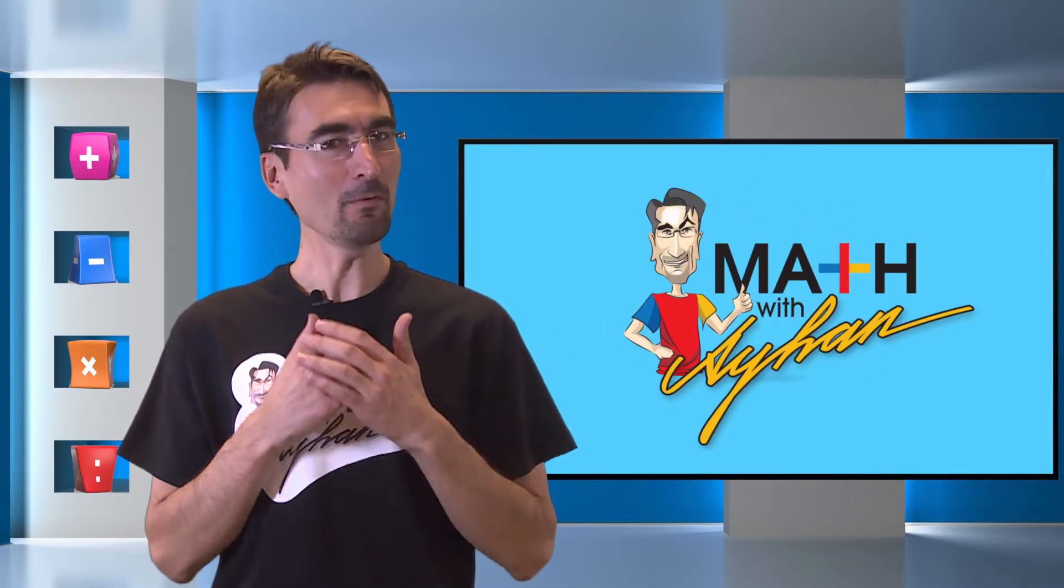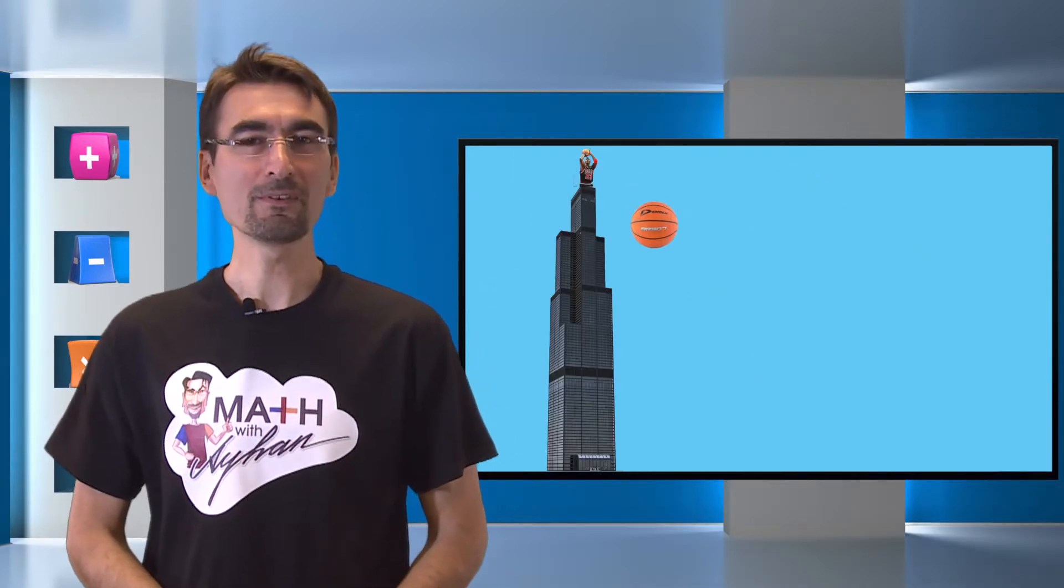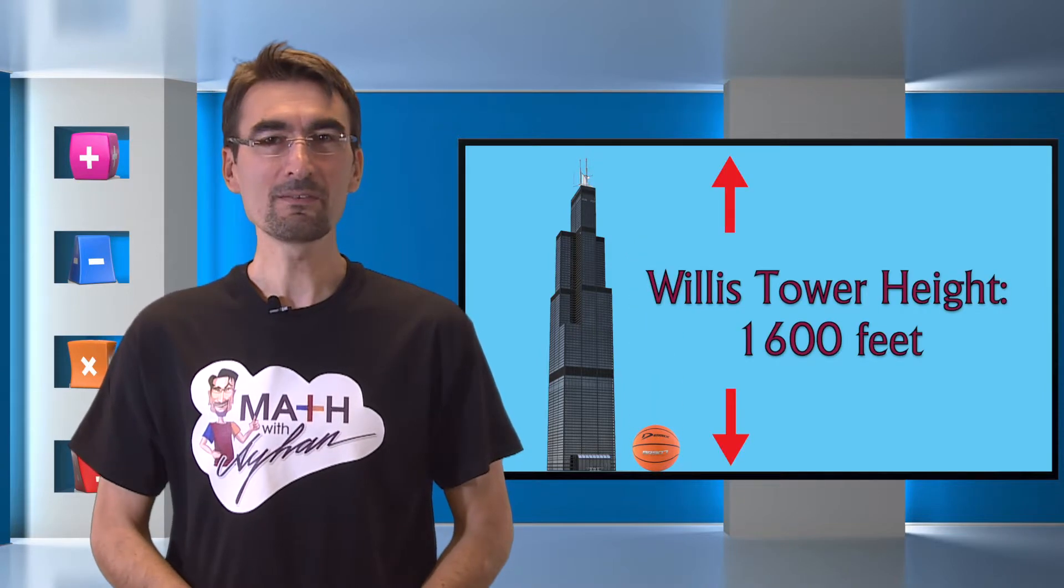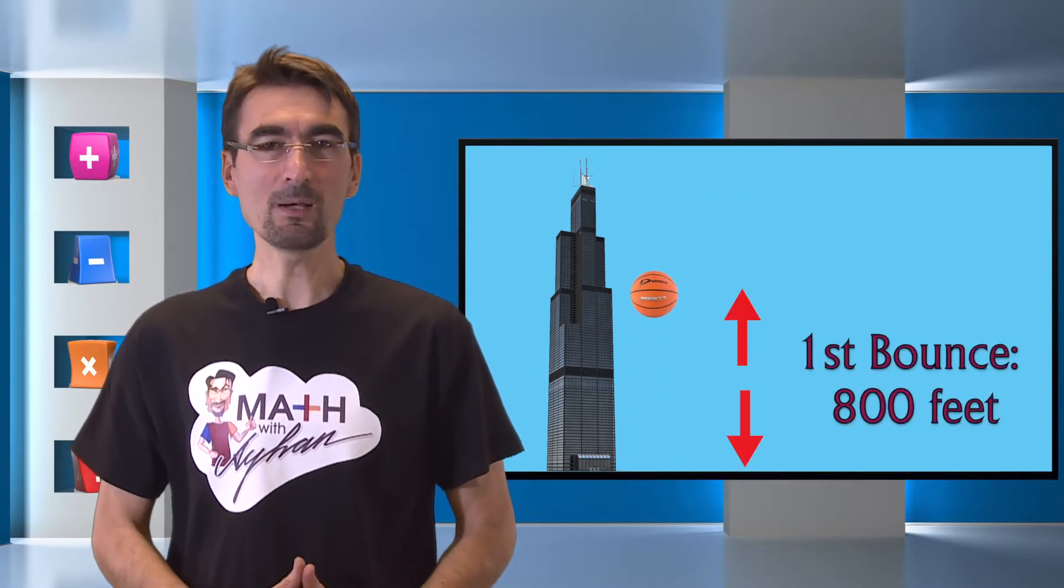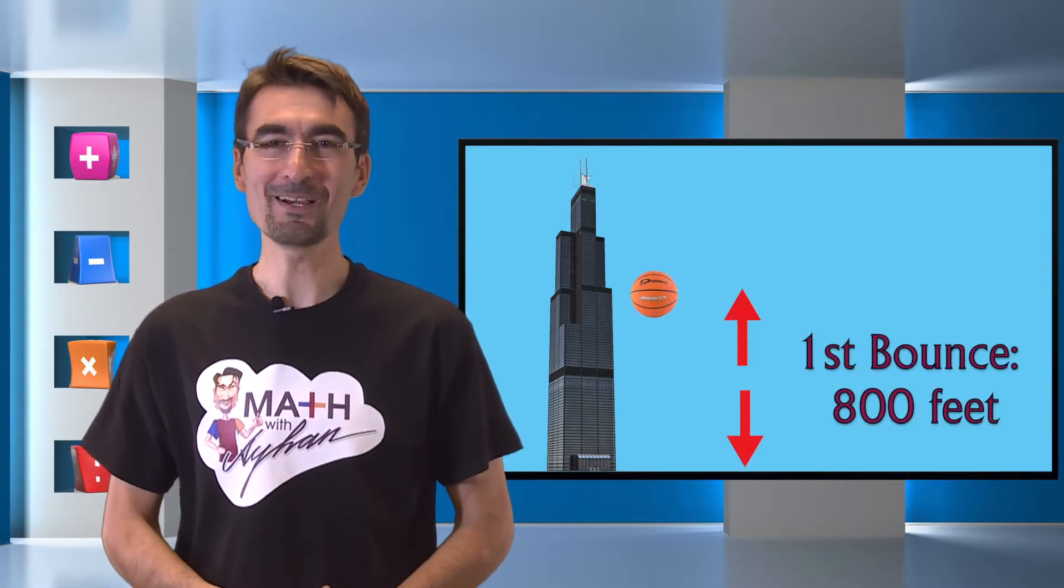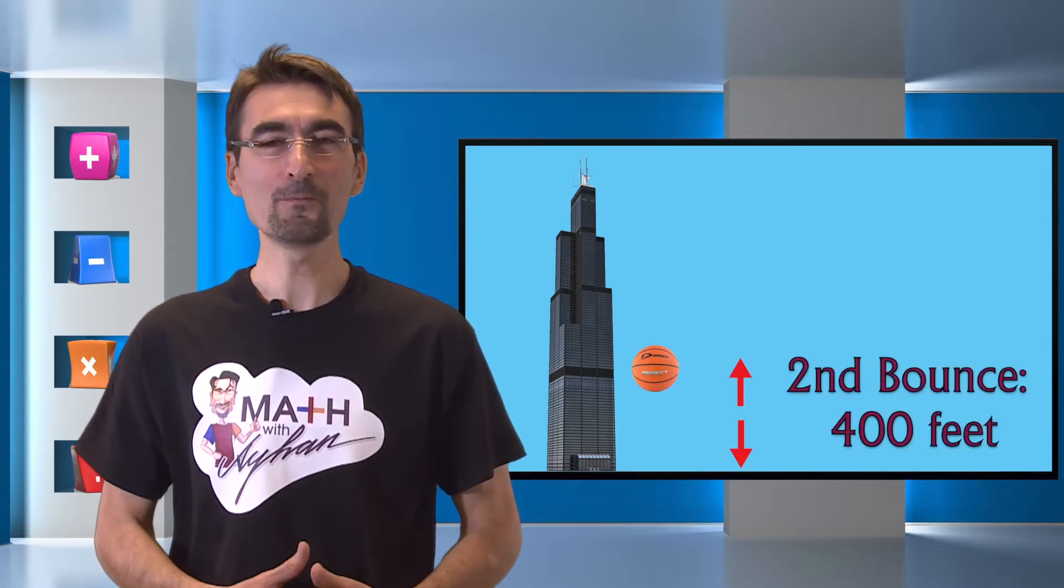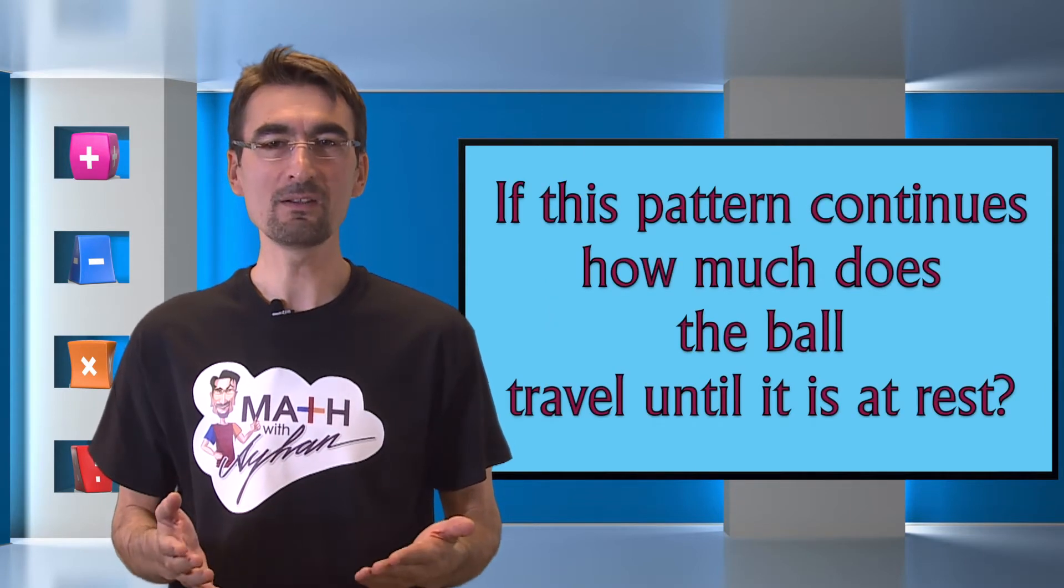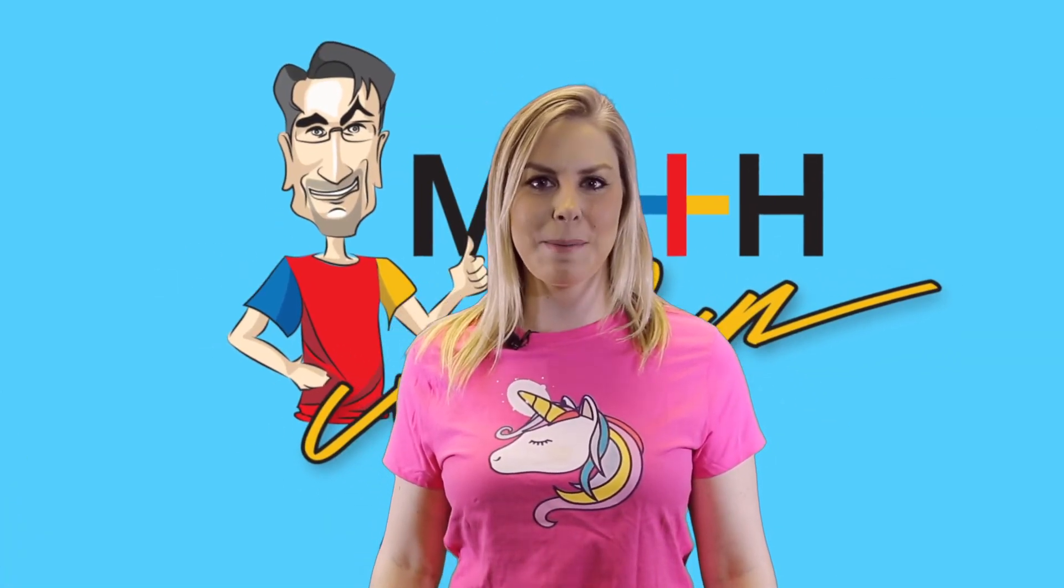Now it's time for Math with You. I'm going to give you our problem of the week and I need you to help us solve it in the comments. Let's say Michael Jordan drops a basketball from the top of Willis Tower which is at a height of 1600 feet. The ball bounces back up to 800 feet for the first time. The second time the ball bounces back up to only 400 feet. If this pattern continues, how much does the ball travel until it is at rest?